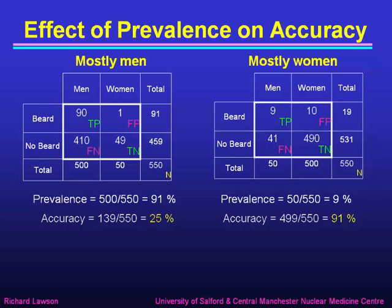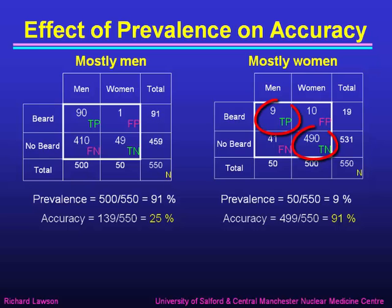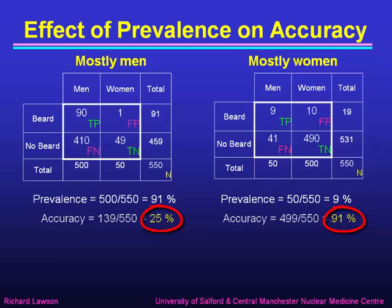Now let's look at another population which is mostly women — for example, a group of nurses who happen to be mostly female. Here again I have a total of 550, but this time it's 500 women and 50 men. The prevalence of Syndrome Y is 50 over 550, which is just 9 percent — a very low prevalence of men. The accuracy is 9 true positives plus 490 true negatives, making 499 correct out of 550, which is 91 percent. So in mostly-women groups we get very high accuracy, whereas in mostly-men groups we got only 25 percent.